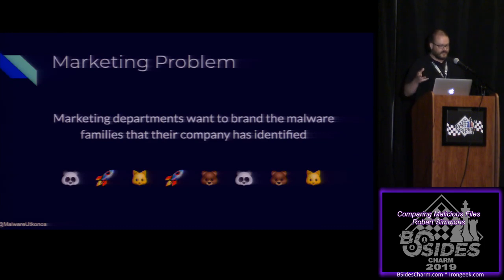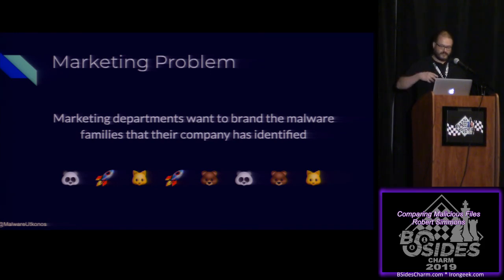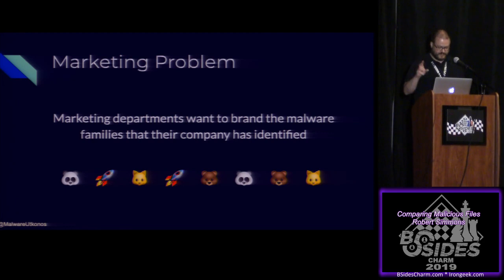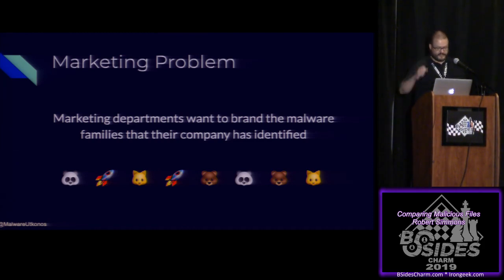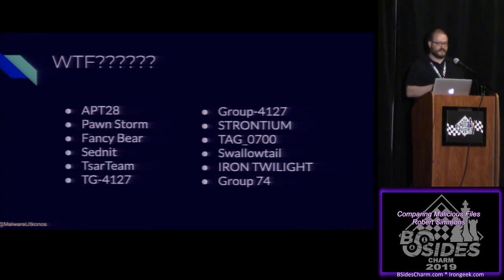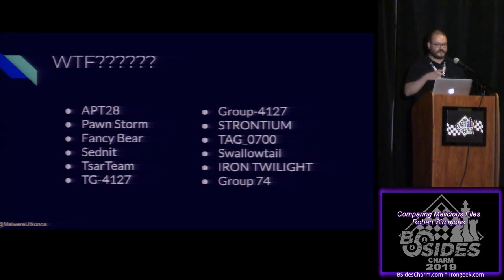There's also a related problem — the marketing problem. Marketing departments want to brand malware families and vulnerabilities these days, whether to be famous for finding something first or for clickbait. That collection of motivations is mostly driven by marketing. That's how you end up with cute names like rockets and kittens and bears and pandas. And then you have many, many different names for the same threat actor group, the same intrusion sets, the same TTPs. So it's hard to pick these apart.